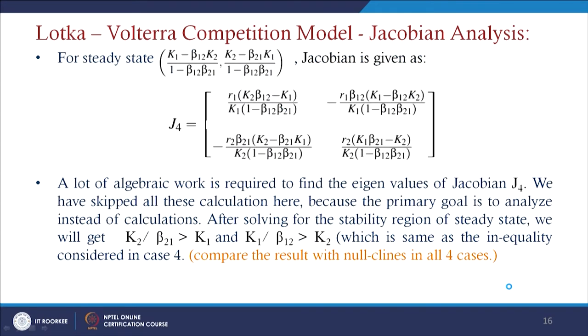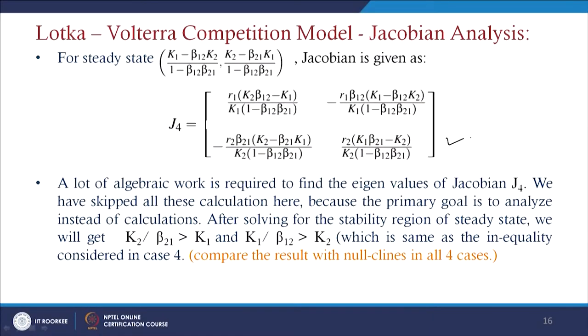For steady state (K1, 0), the Jacobian J3 is an upper triangular matrix. Its eigenvalues are the principal diagonal elements. The stability condition gives K2/β21 < K1, consistent with null-cline Case 2 results. For the coexistence steady state, the Jacobian requires extensive algebraic work to find eigenvalues, which we skip as it is a tedious calculation.